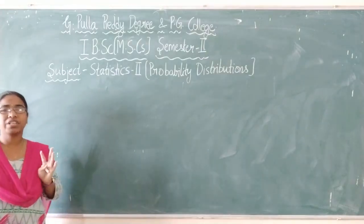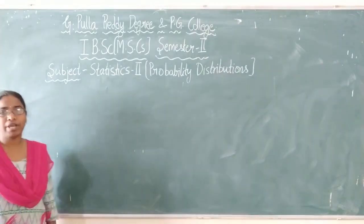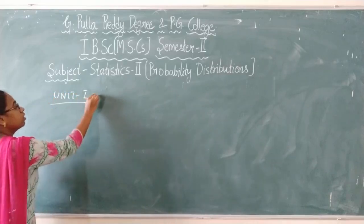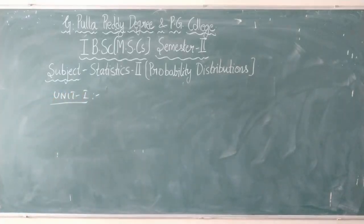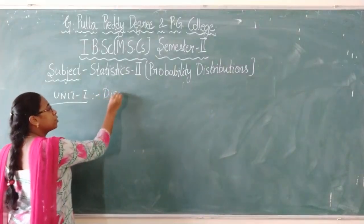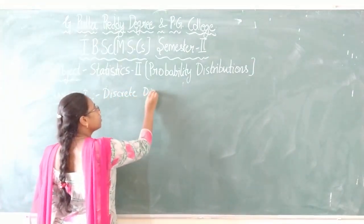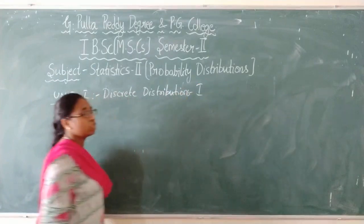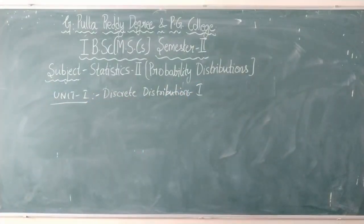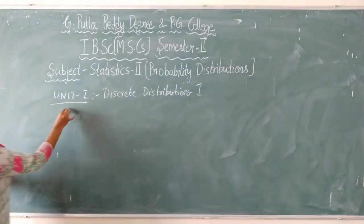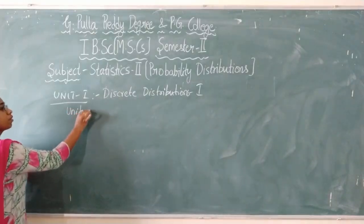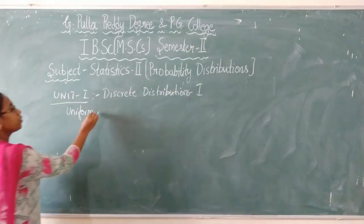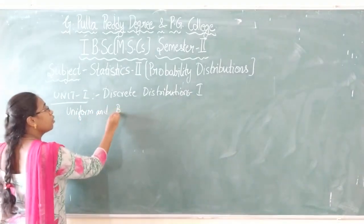The first two units cover discrete distributions and the next two units cover continuous distributions. Coming to unit 1, it is Discrete Distributions 1. The first distribution is uniform distribution, and the next one is Bernoulli distribution.